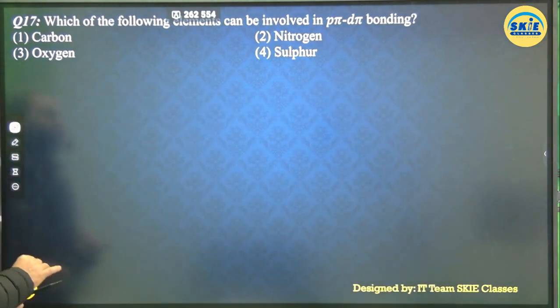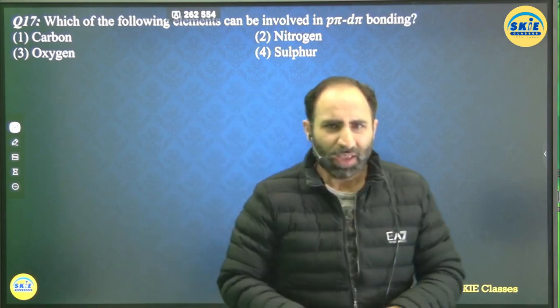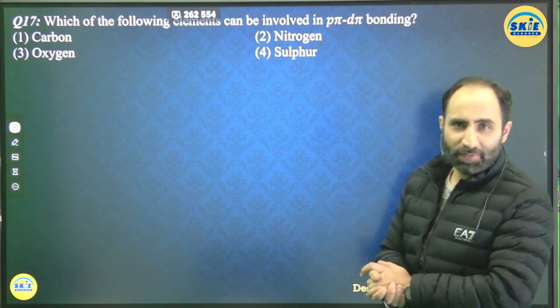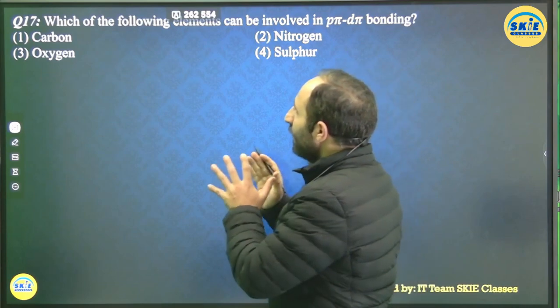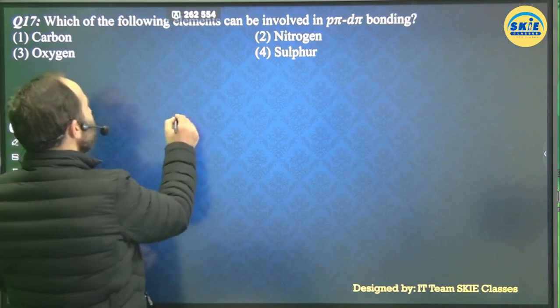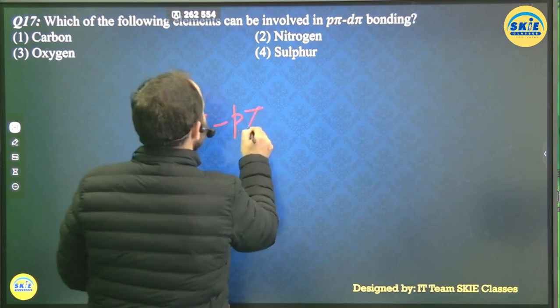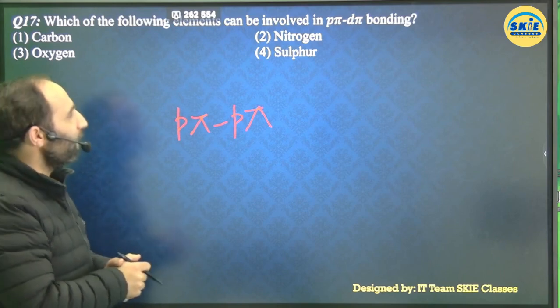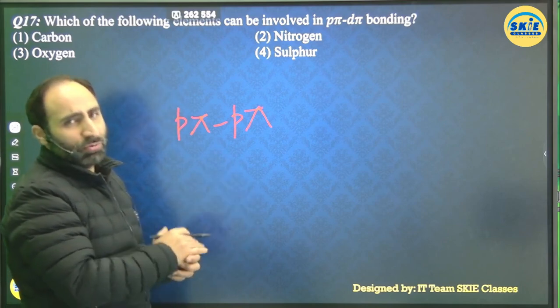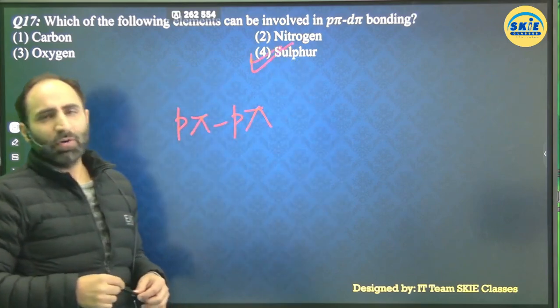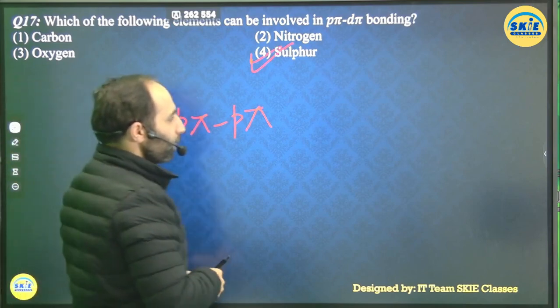Question 17: which element can be involved in p-pi-d-pi bonding? Carbon, nitrogen, and oxygen belong to the second period — they have no d-orbitals, so their pi bonds are only p-pi-p-pi. Sulfur belongs to the third period and has available d-orbitals. Therefore sulfur can form both p-pi-p-pi and p-pi-d-pi bonds. Sulfur is the only element among the options that can participate in p-pi-d-pi bonding.